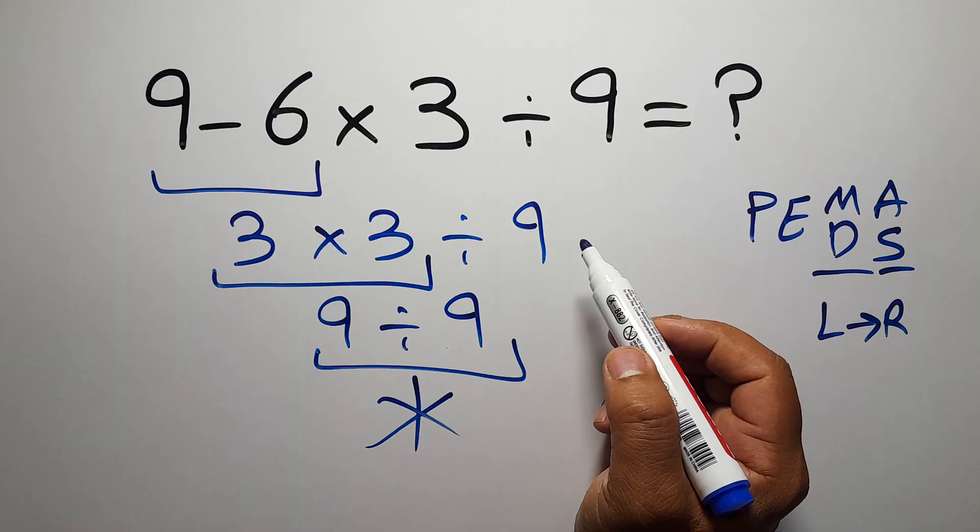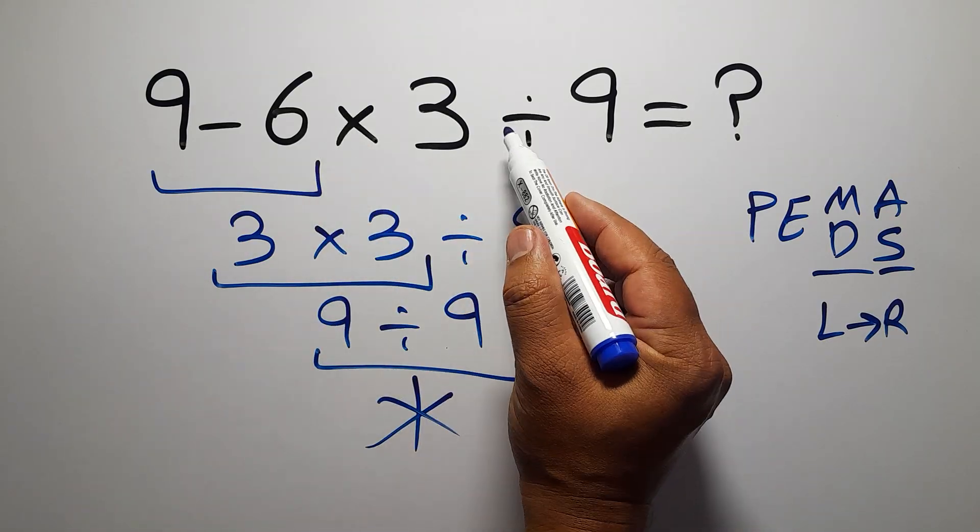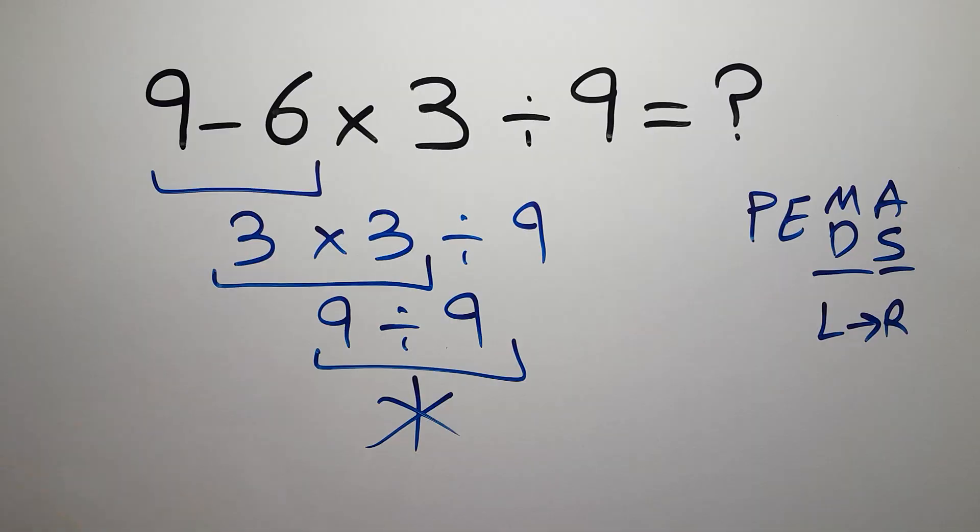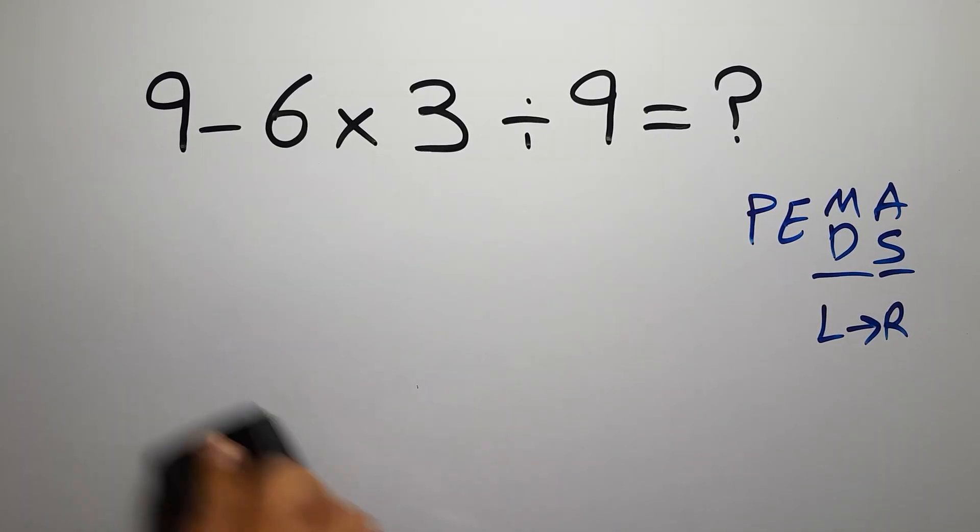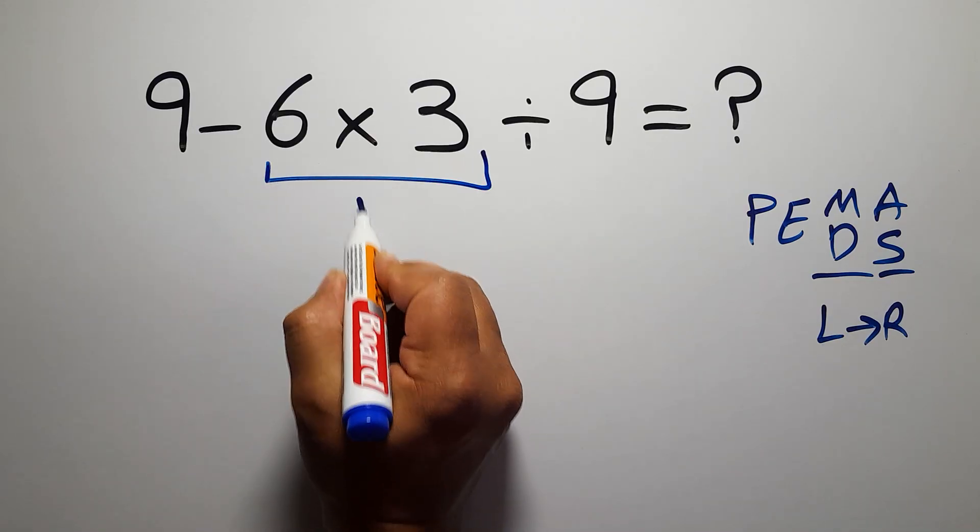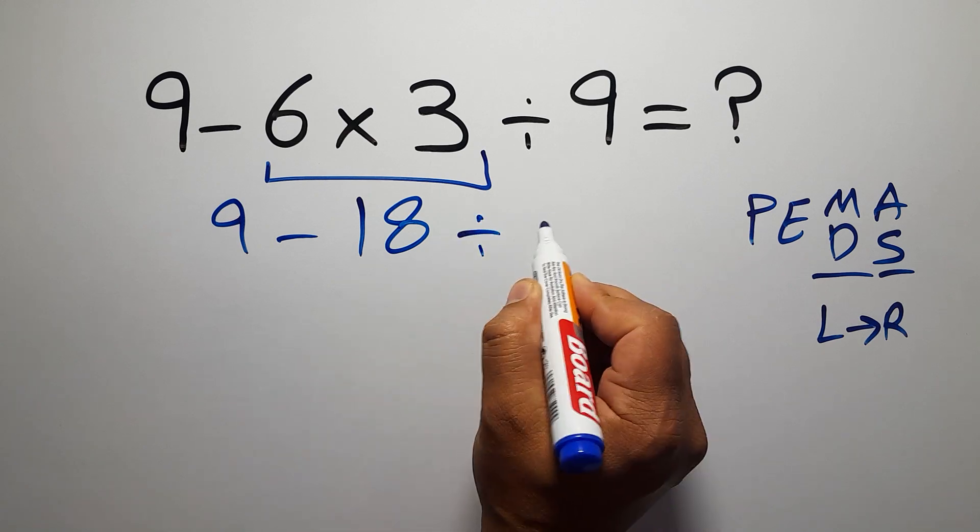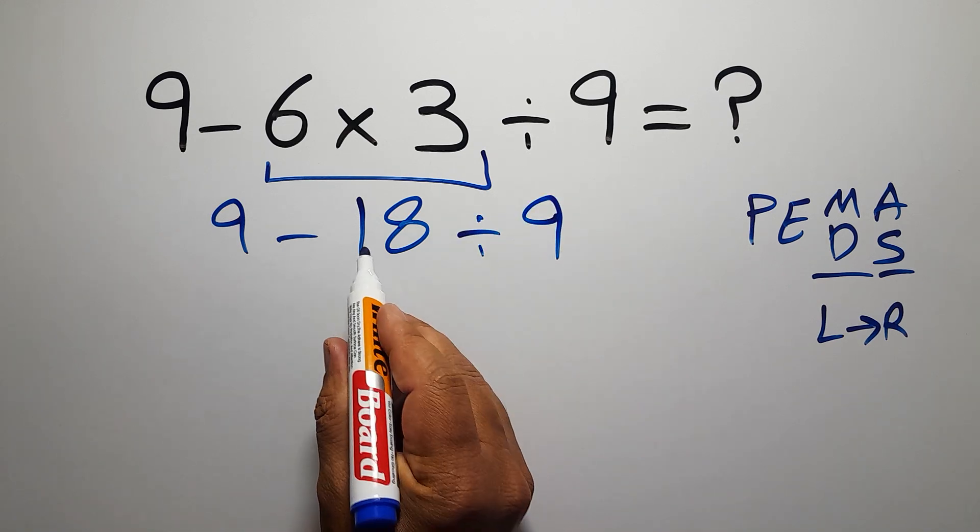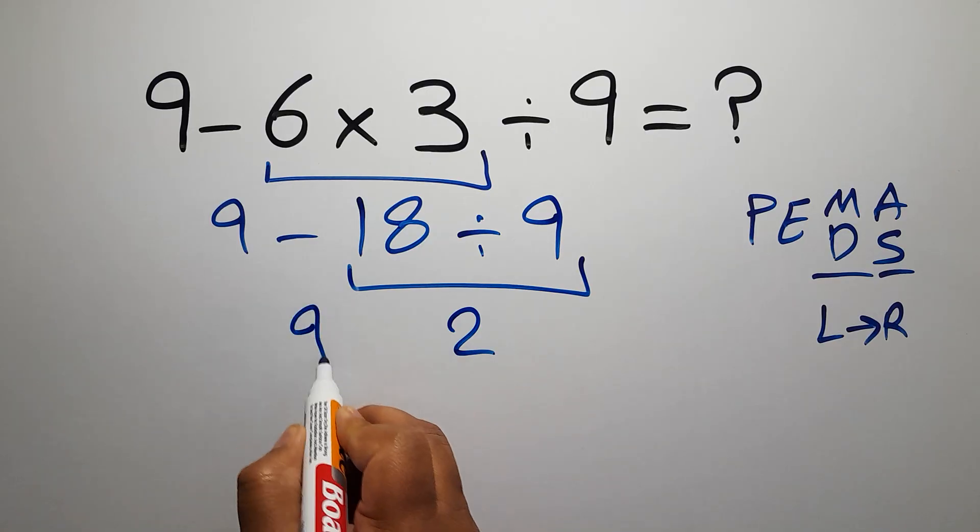So first we have to do this multiplication, then this division, and finally subtraction. 6 times 3 gives us 18, so 9 minus 18 divided by 9. 18 divided by 9 gives us 2, so we have 9...